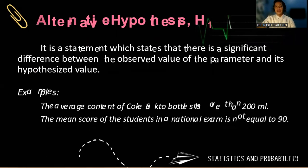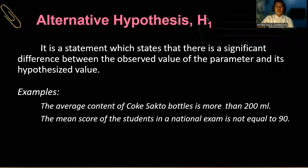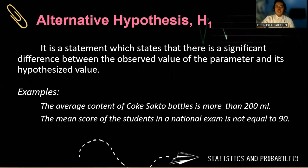For the alternative hypothesis, it is the statement that there is a significant difference between the observed value of the parameter and its hypothesized value. So if there is a difference, we use inequalities such as greater than, less than, or not equal to.